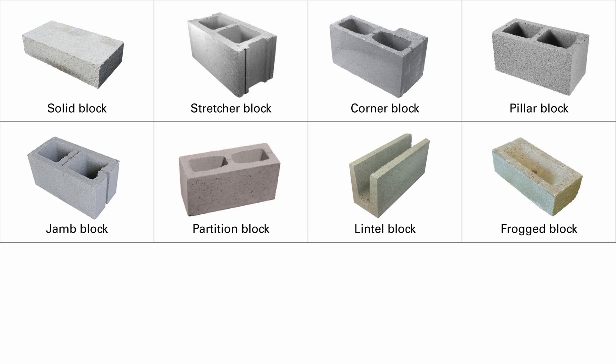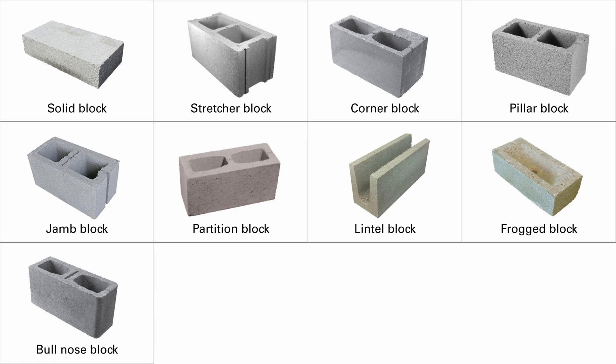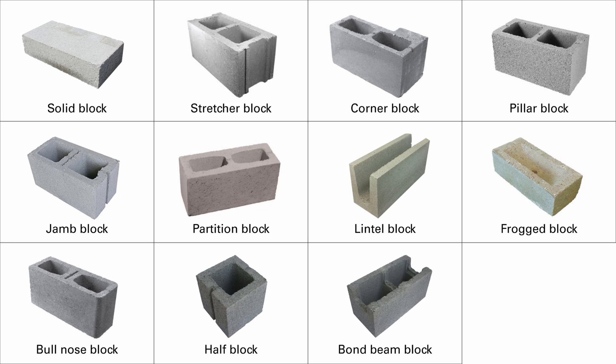Frogged brick blocks have a groove on top of the brick that can hold mortar. Bullnose blocks are similar to corner blocks but have rounded edges. Half blocks are used to finish a course without cutting full blocks. Bond beam blocks have their webs knocked out to make room for horizontal rebar. Finally, we have double or single open-end bond beam blocks.